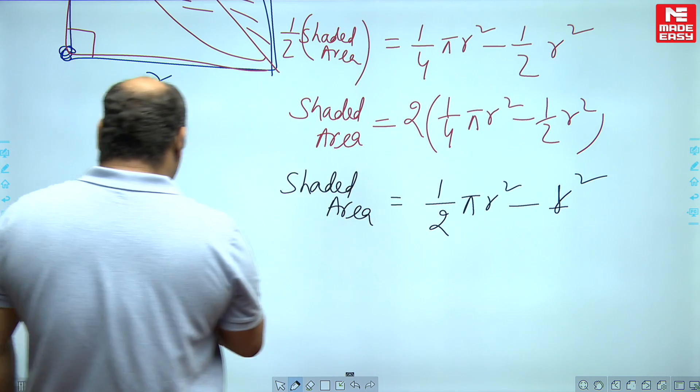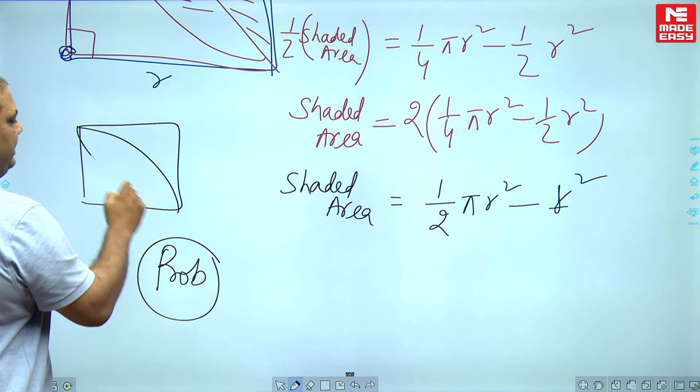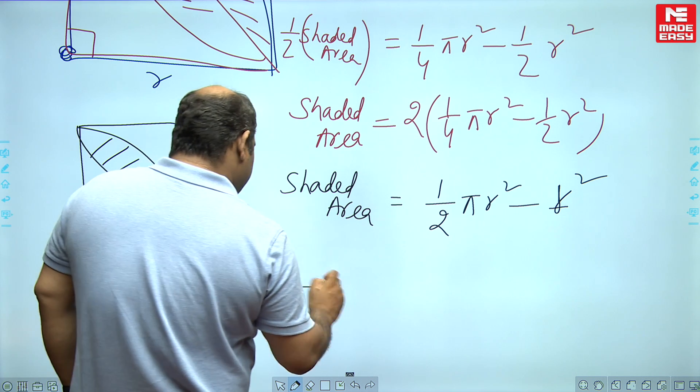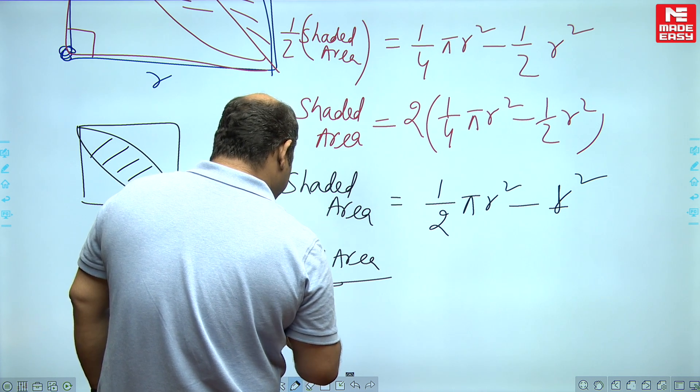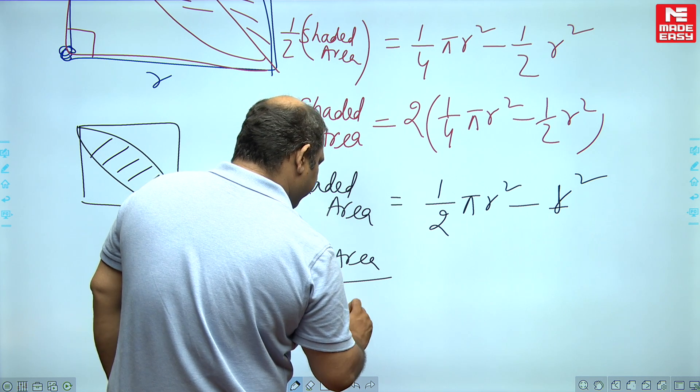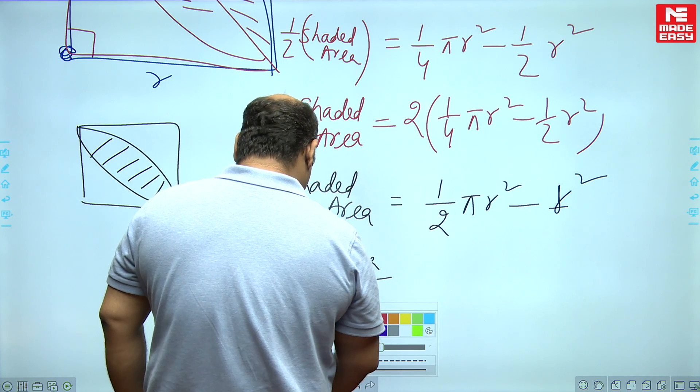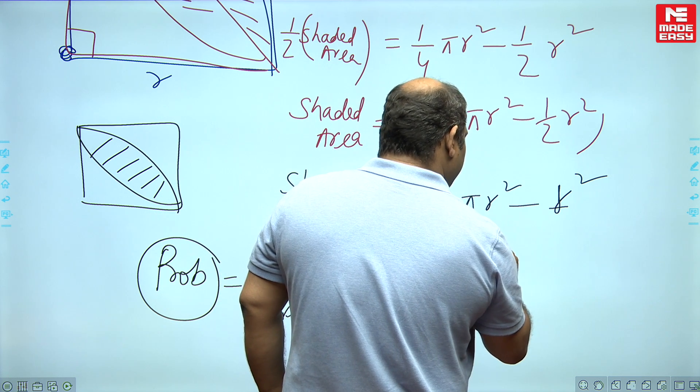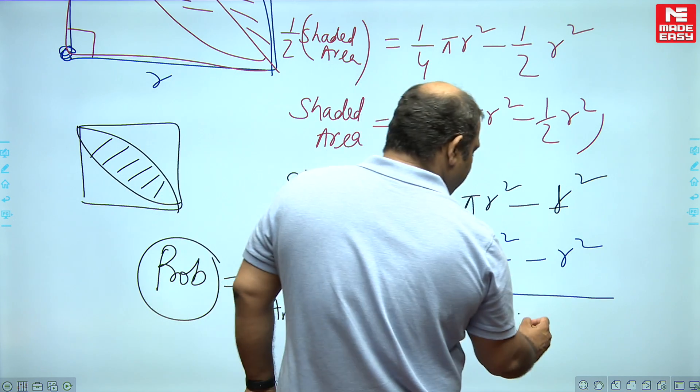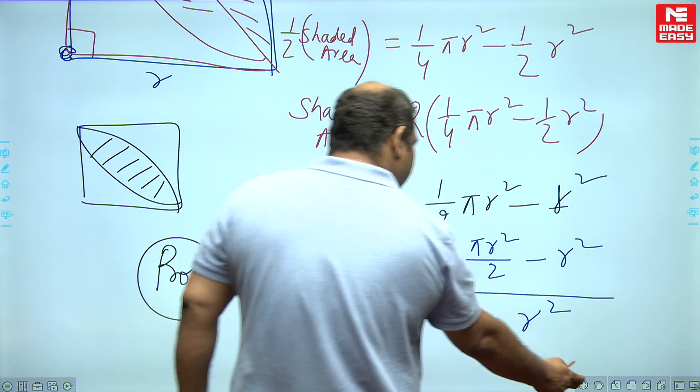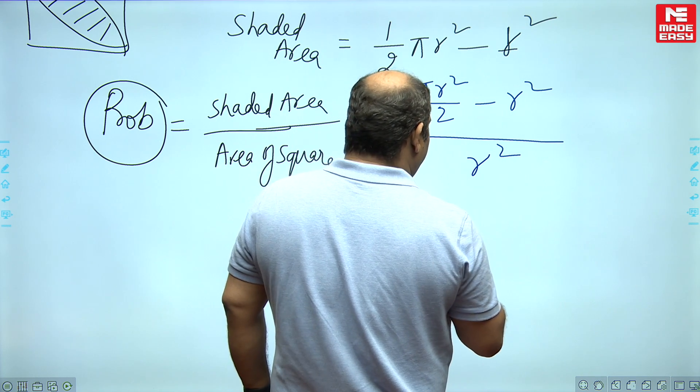As per the question, you need to find the probability, which is shaded area divided by area of square. The shaded area is pi R square by 2 minus R square. And eventually when you solve it, you are going to get the final result as pi by 2 minus 1.